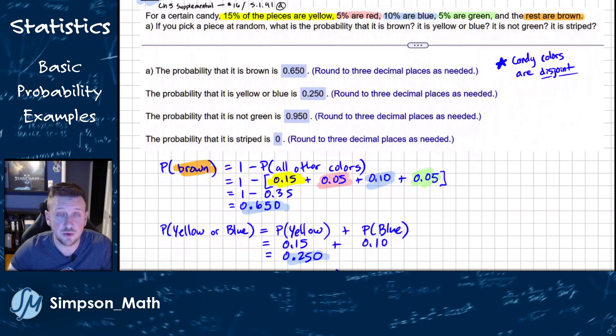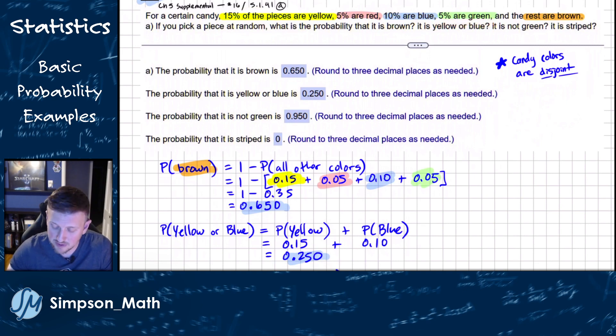What's the probability that it's blue or yellow? Again, since it's disjoint, I can just add up my blue and add up my yellow. So 10% plus 15% gives me my 25%. What about the probability that it's not green? We're told that 5% are green. So if it's not green, that's just the complement of green. So 100 minus 5 is 95%. So that'd be 0.95 or one minus 0.05 would give me the 0.95.